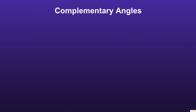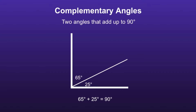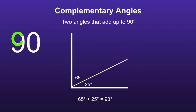Complementary angles are two angles that add up to 90 degrees. To remember this, if we write the number 90, there's actually a hidden C within it for complementary.